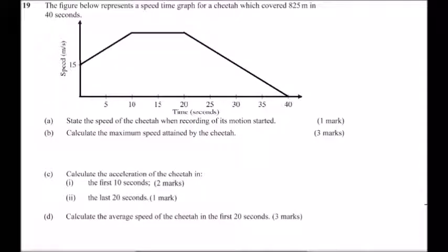Question 19: we are told the figure below represents a speed-time graph for a cheetah which covered 825 meters in 40 seconds. The vertical scale is speed and the horizontal scale represents time. Part a: state the speed of the cheetah when recording of its motion started. If you look at the graph, the speed around the y-axis was 15 meters per second when the recording started.